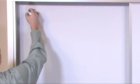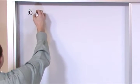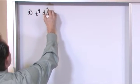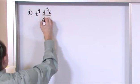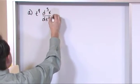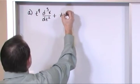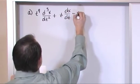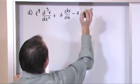What is the order of the following differential equation? t to the fourth power times the third derivative of x with respect to time, plus t times dx/dt minus x is equal to t to the seventh power.